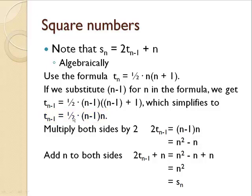To make this look like S sub n equals 2 times T sub n minus 1 plus n, I'll multiply both sides by 2 to get 2T sub n minus 1 is n minus 1 times n, which simplifies to n squared minus n. Now if I add n to both sides, I get 2T sub n minus 1 plus n equals n squared minus n plus n. And that equals n squared, which is the same as the explicit formula for S sub n.